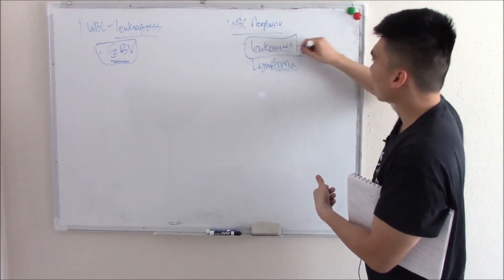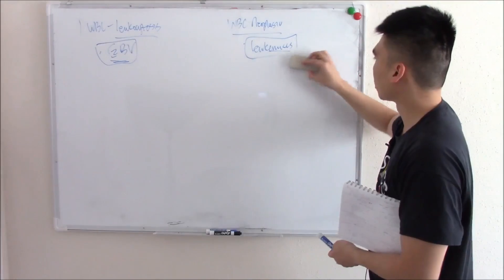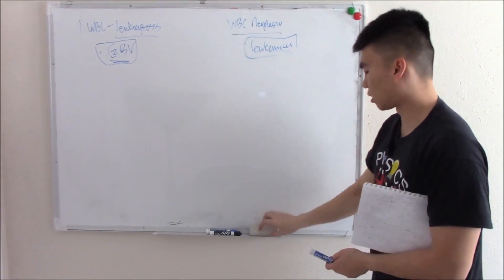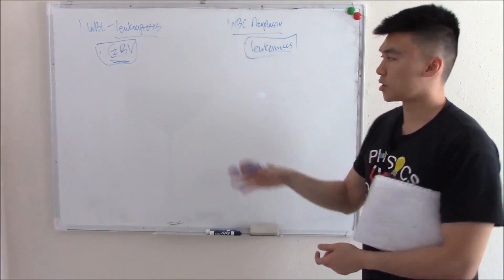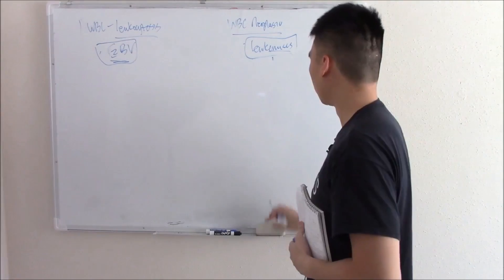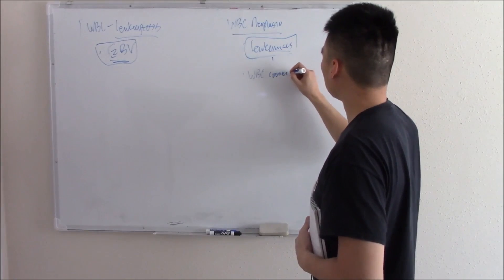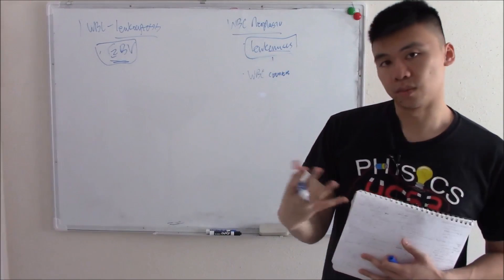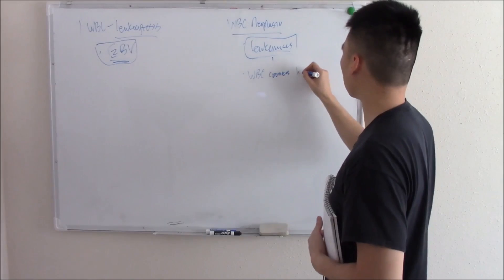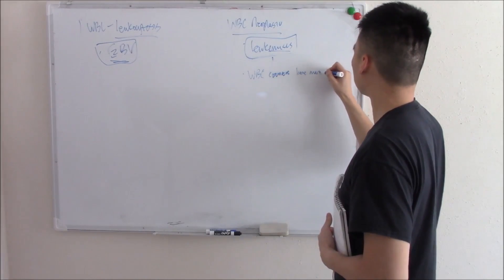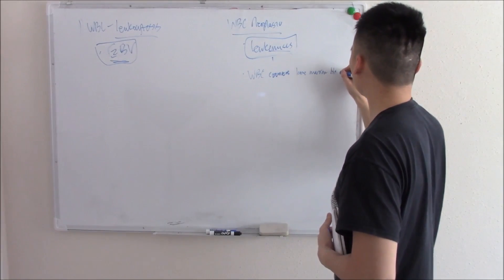This video we're going to talk about leukemias. Leukemias can arise spontaneously but they're also associated with genetic mutations. By definition, leukemias are white blood cell cancers that mainly affect your bone marrow and your blood.